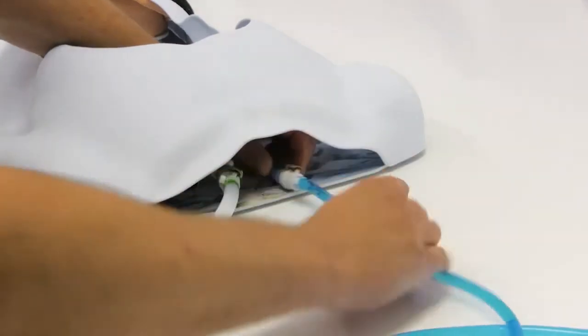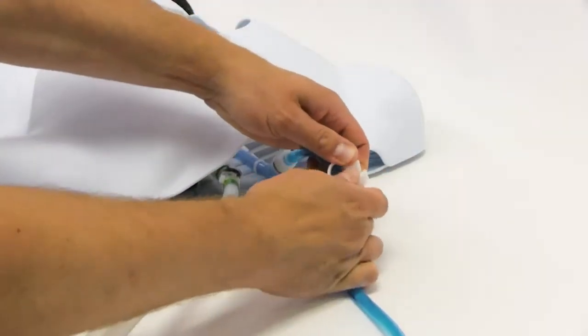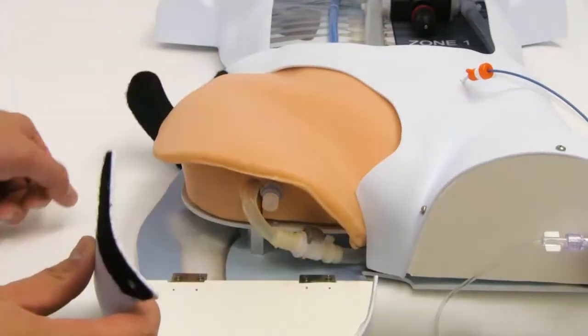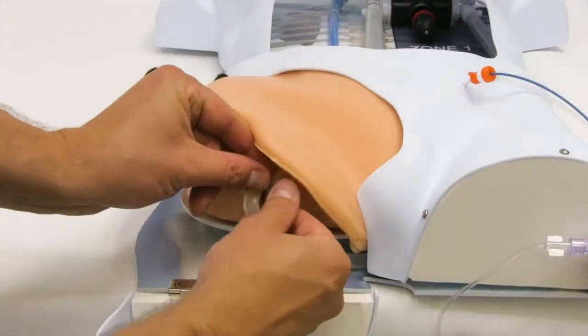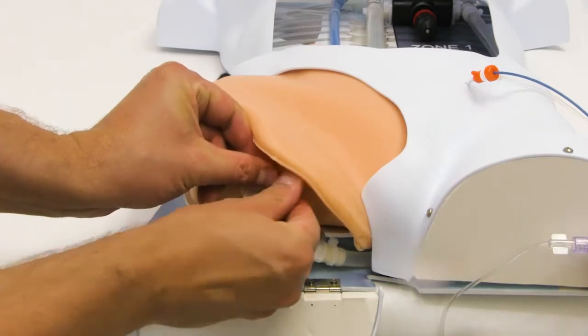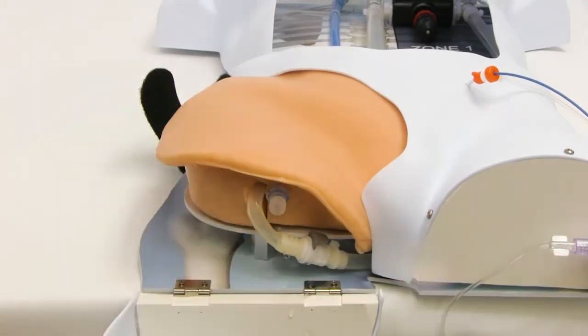Connect the bladder extension line to the vena cava in the body model. Open the clamp on the extension line. Open the thigh patch cover on the model to expose the back of the thigh patch. Carefully unscrew the cap at the end of the blue tubing in the back of the thigh patch. Bleed the air out of the vena cava and then replace the cap.